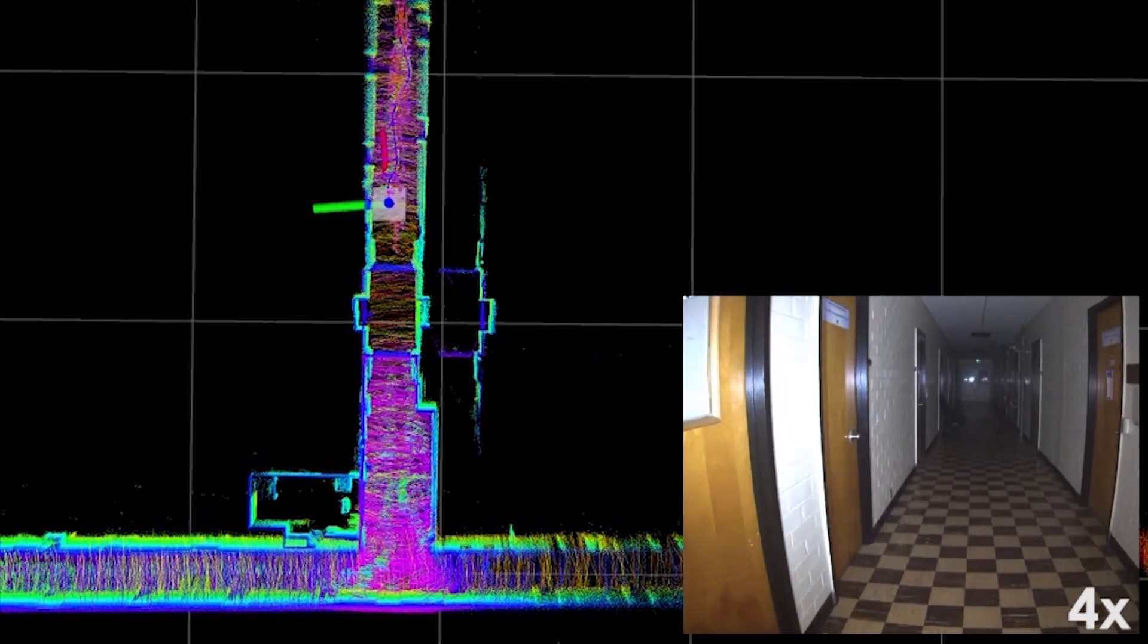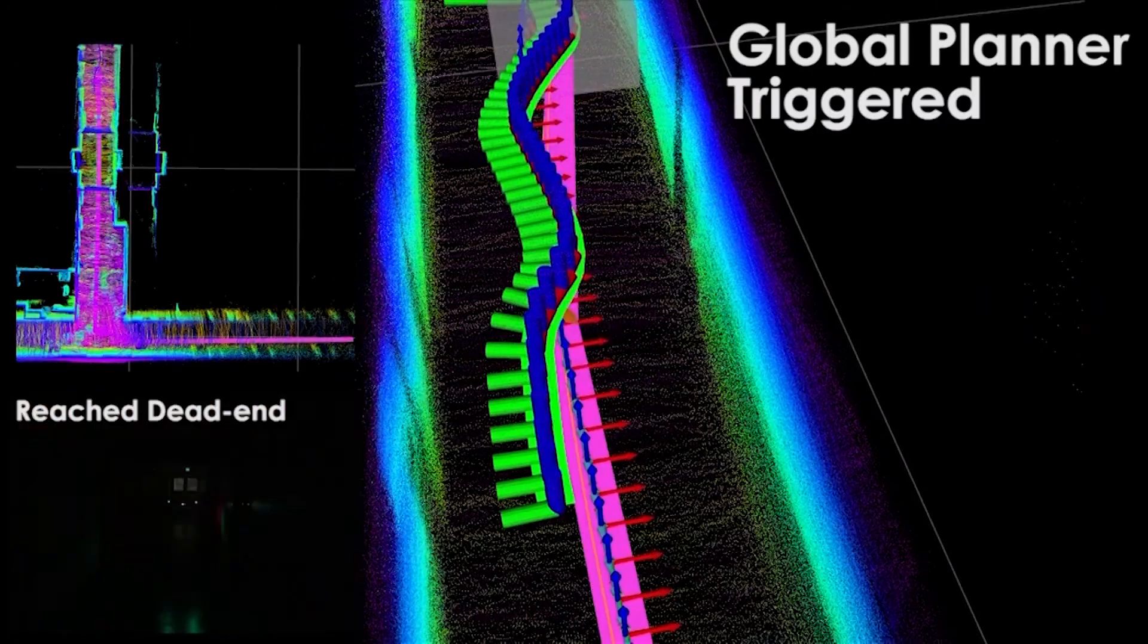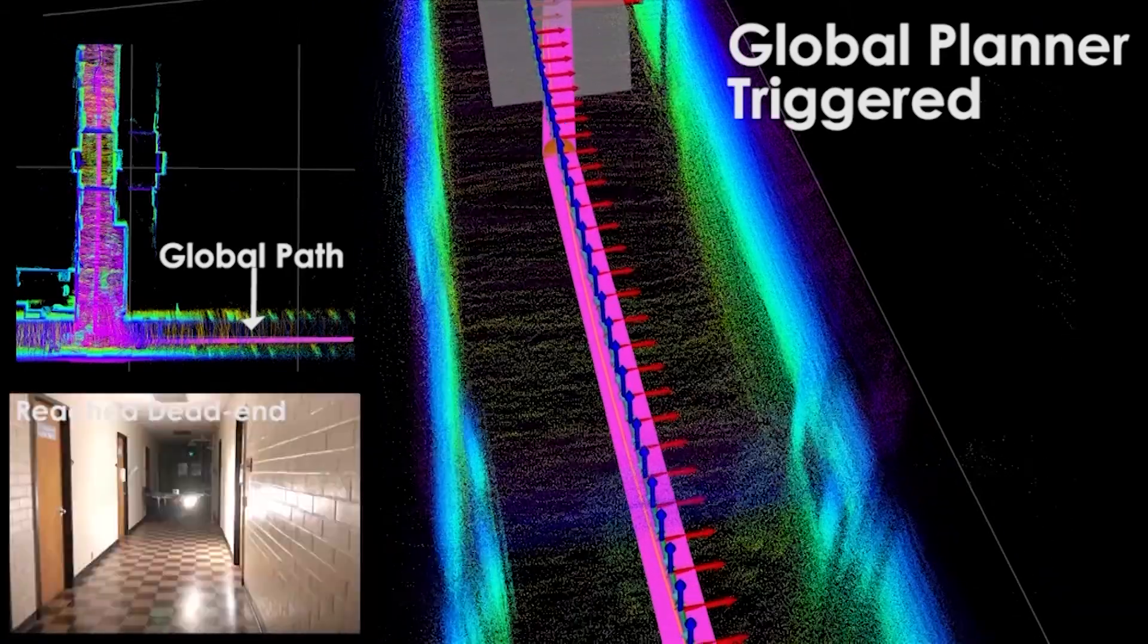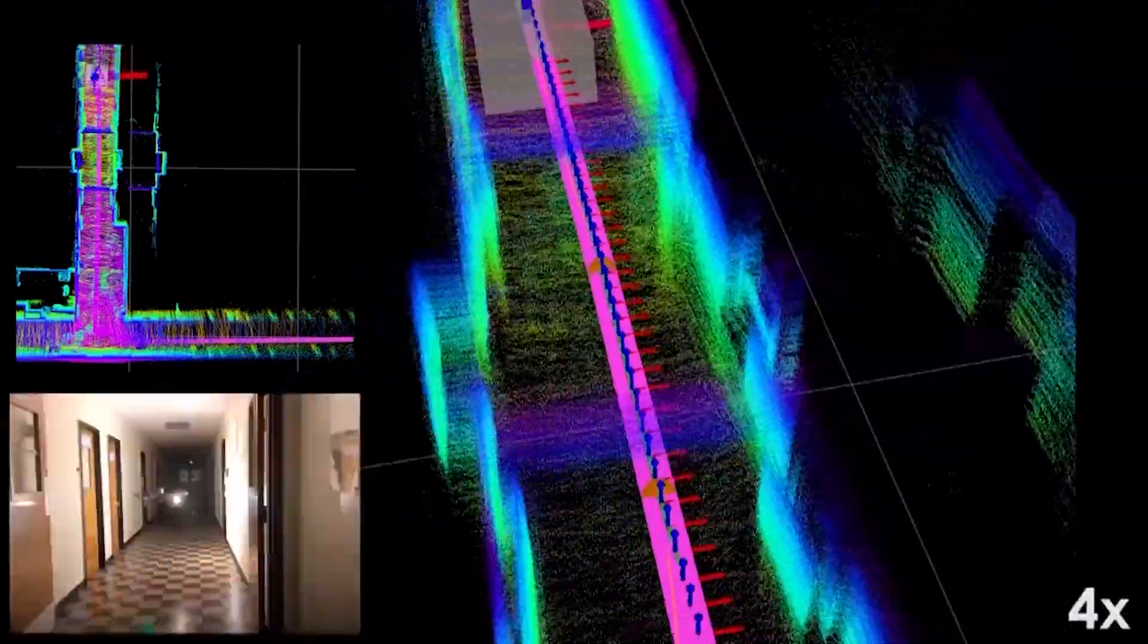In the first experiment, we demonstrate the performance of the proposed planner inside corridors of the Applied Research Facility at the University of Nevada, Reno, focusing on the global planning behavior. A customized DJI Matrice M100 platform was utilized in this experiment.